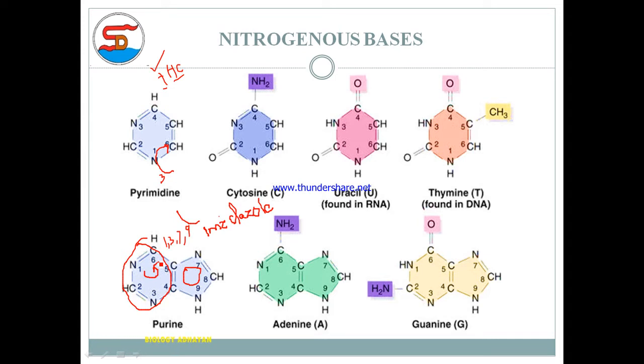Thymine has oxygen at positions 2 and 4, and a methyl group at carbon position 5, making it 2,4-dioxy-5-methyl-pyrimidine. For purines, adenine has an amino group at carbon position 6, so it's called 6-amino-purine.